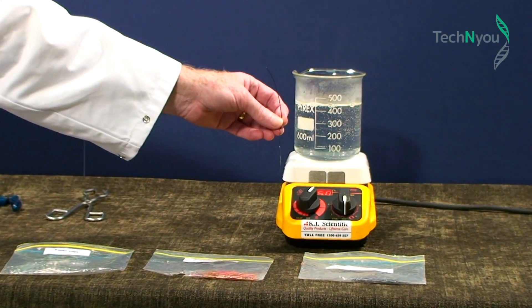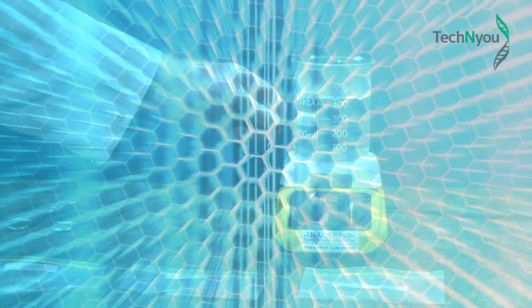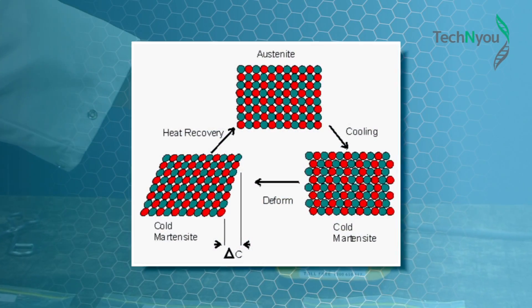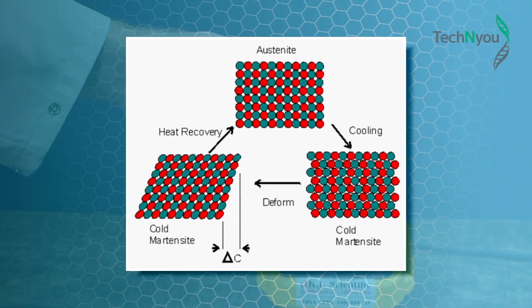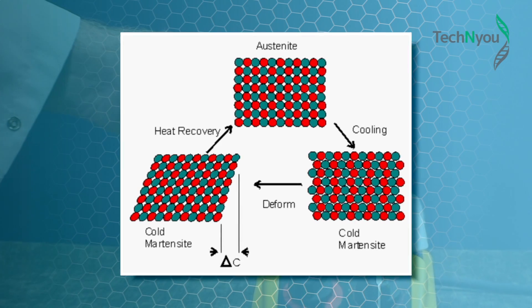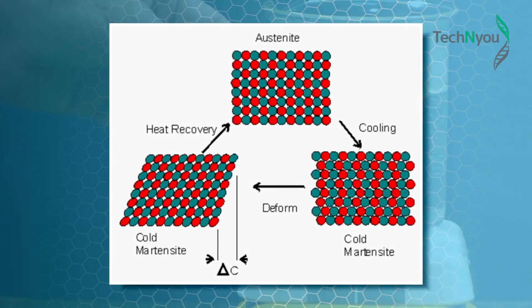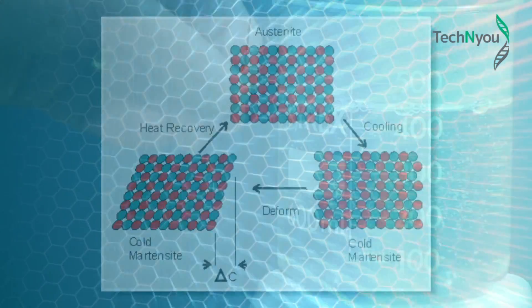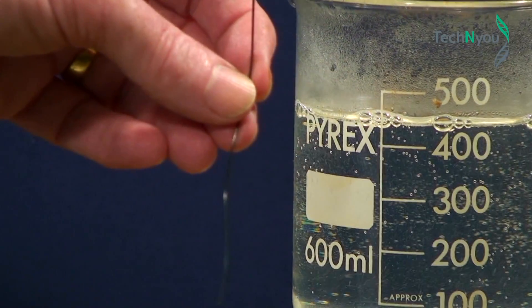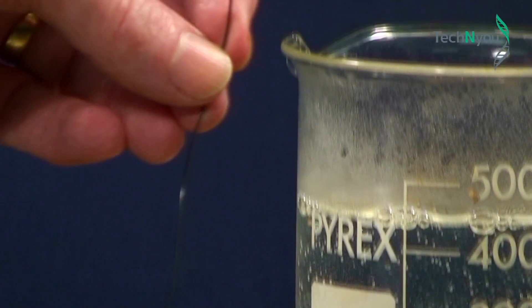In this experiment we demonstrate how we can manipulate the crystal structures in some man-made materials to influence their behaviors. The experiment will be conducted in three parts to explore the properties of Nitinol and show how it can be programmed at certain temperatures to remember a shape.